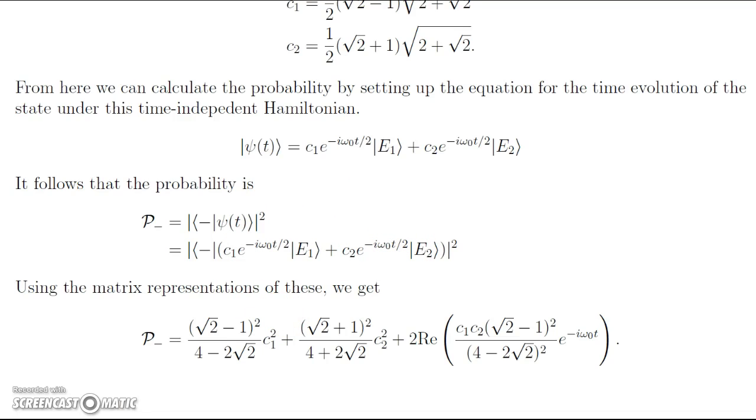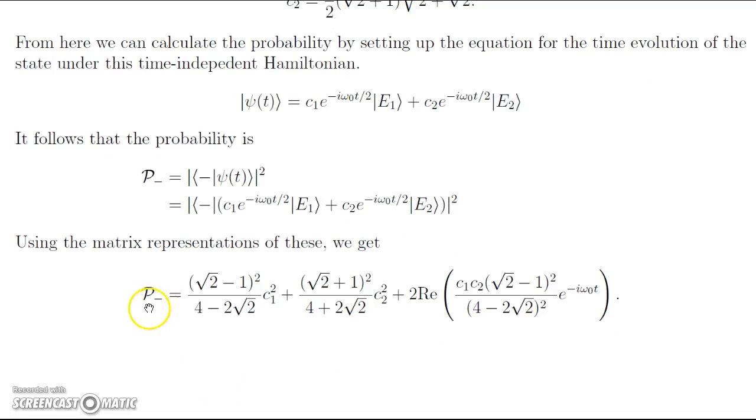We get this really messy probability. I don't have the exact value here for the probability due to how messy it is. However, we do get a final probability of measuring spin down in the z direction as (√2 - 1)² / (4 - 2√2) times |C_1|² plus 2 times the real part of C_1*C_2*(√2 - 1)² / (4 - 2√2)² times e^(-iω_0t). That will give us our following probability as desired, and that will be it. Thank you.